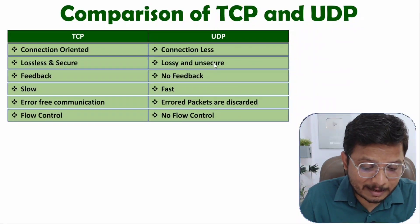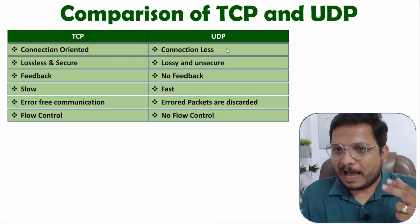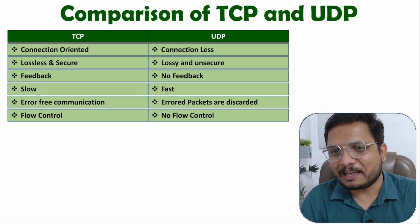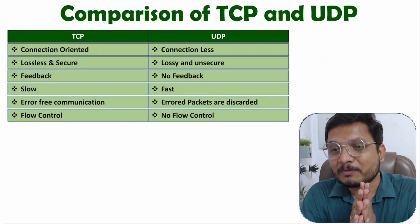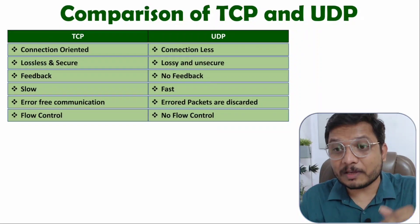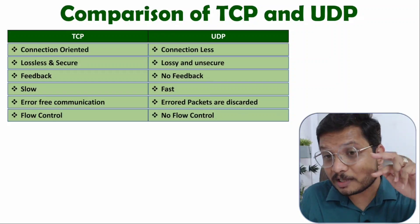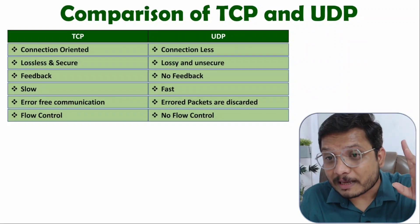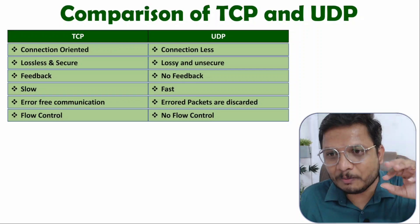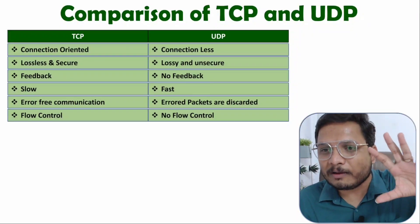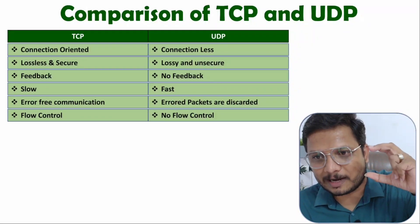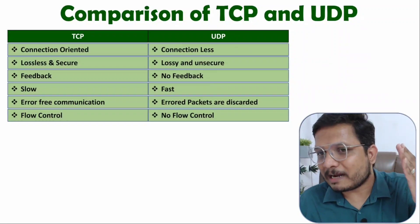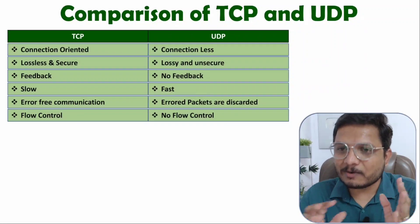If I have a bandwidth of 1 Mbps then I can only receive 1 Mbps data — I cannot receive 4K quality. But with YouTube, which uses TCP, I can access 4K quality because I may have to wait while the buffer fills. In live broadcast you cannot get 4K with low bandwidth — that is the key difference.